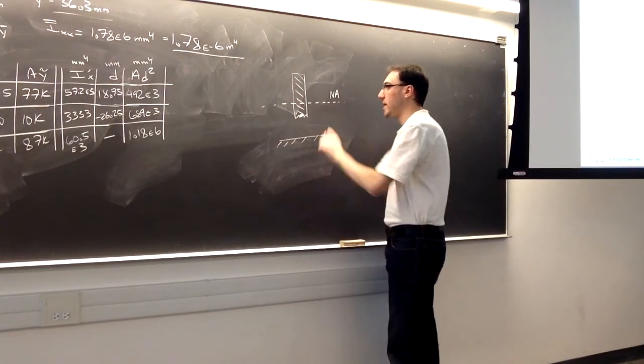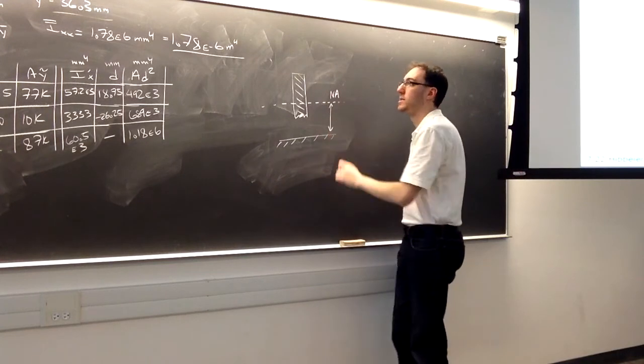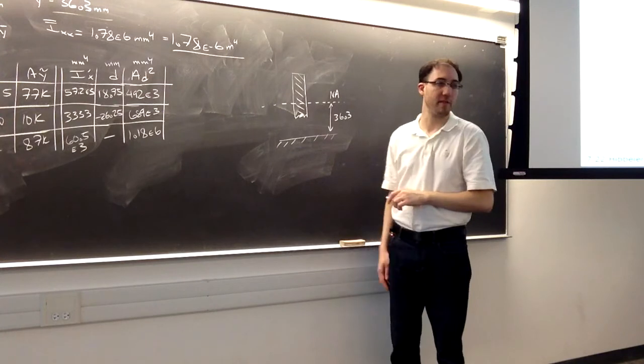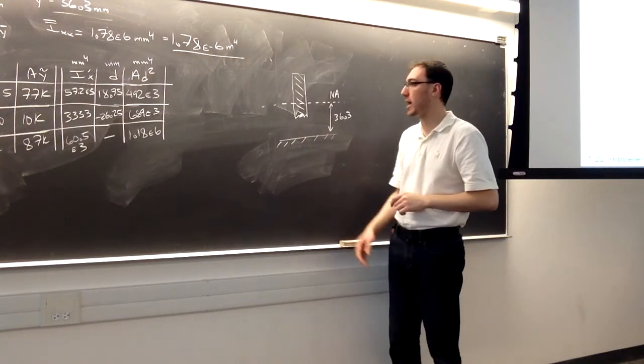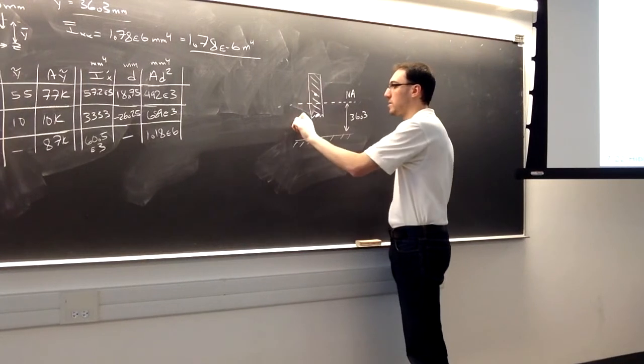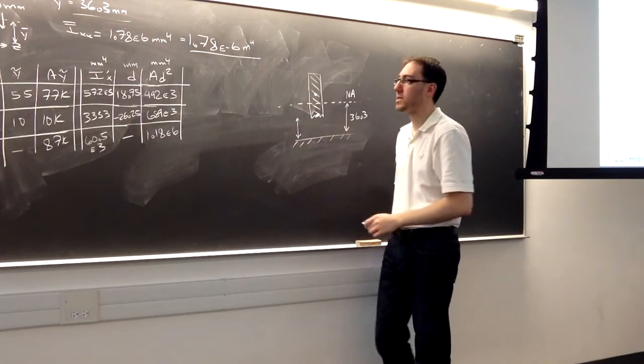So as a frame of reference down here, we only know that the neutral axis is 36.3 millimeters from the bottom of the shape, which is not included in the mini shape. And then we need to find where the centroid of this shape is, because we also know that that distance will be 20.